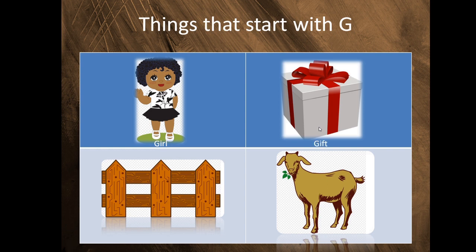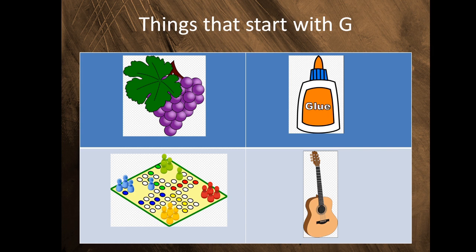Let's look at some more G words. This is a girl. This is a gift. This is a gate. And this is a goat. All of these have a g sound. Can you say these with me? Girl, gift, gate, goat. These are grapes, this is glue, this is a game, this is a guitar. They all start with G and make a g sound. Can you say them with me? Grapes, glue, game, guitar.